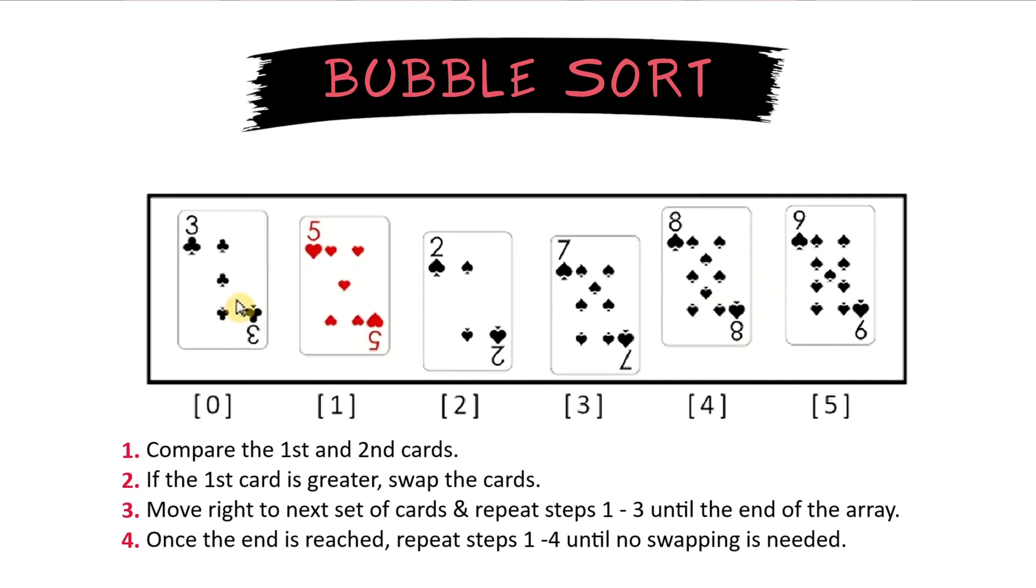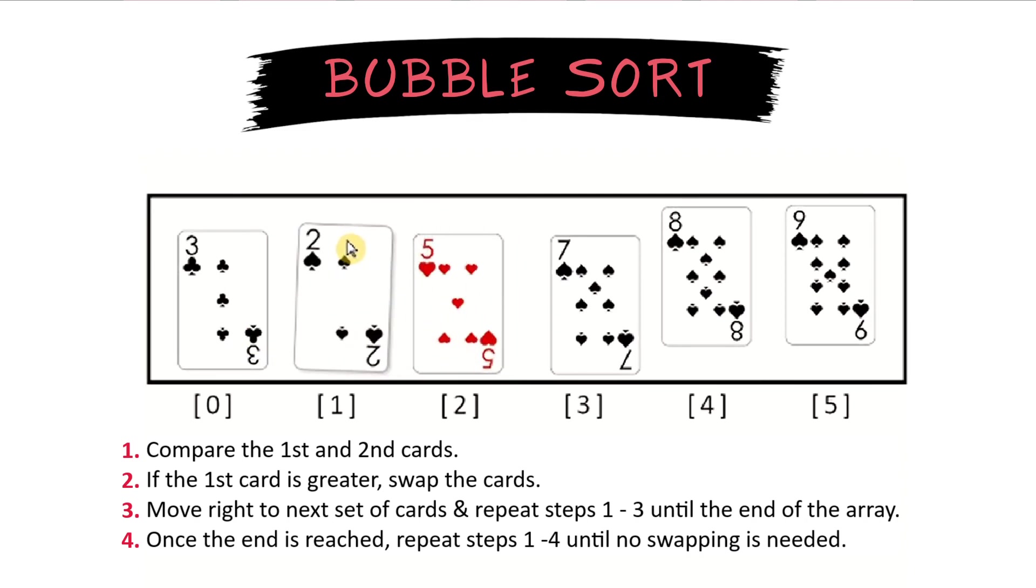Go back to the beginning. Check 3 and 5, nothing to swap there. Now we check 5 and 2. Since 5 is larger than 2, we swap those 2. Then 5 and 7, no reason to swap, so 7 is now sorted.